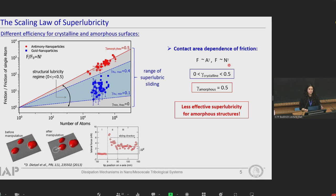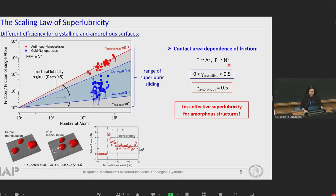Nevertheless, these results connected the amorphous and crystalline interfaces with different contact area scaling factors for antimony and gold nanoparticles. Therefore, open questions remain about the chemical nature of the interface. To determine the atomic origins of superlubricity, we still need a direct switch of the interface from amorphous to crystalline without modifying its chemistry. If we could achieve this in our experiments, that would be the fingerprint — please keep that word in mind, because I will come back to it later.